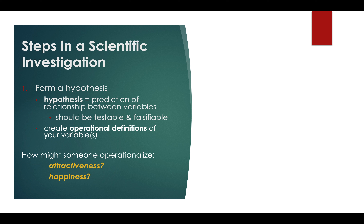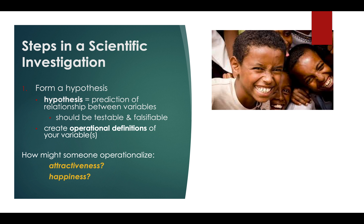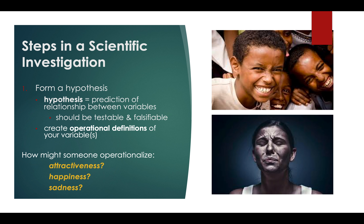How might you operationalize happiness? You can define it as how many times a person smiles per hour or how many positive comments they say to coworkers if you're looking at happiness in the workplace. Sadness could be the number of times somebody frowns or says negative comments. You could also give people a survey questionnaire. We can look at thoughts and attitudes by asking people questions, and overt behavior like facial expressions, body posture, and things people are saying.